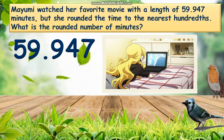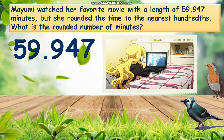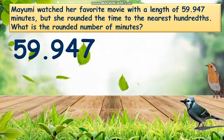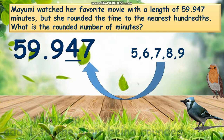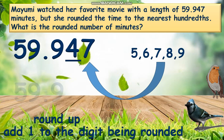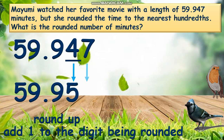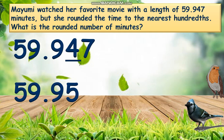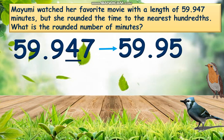The last example: Mayemi watched her favourite movie with a length of 59 and 947 thousandths minutes, but she rounded the time to the nearest hundredths. What is the rounded number of minutes? Find the rounding place, and that is 4. Then identify the digit to its right, which is 7. Since 7 is greater than 4, let's round up. Add 1 to 4 and it will be 5. The remaining digits to their right will be 0, or we may not write. When we round off 59 and 947 thousandths to the nearest hundredths, the answer is 59 and 95 hundredths. Therefore, Mayemi's favourite movie lasts 59 and 95 hundredths minutes.